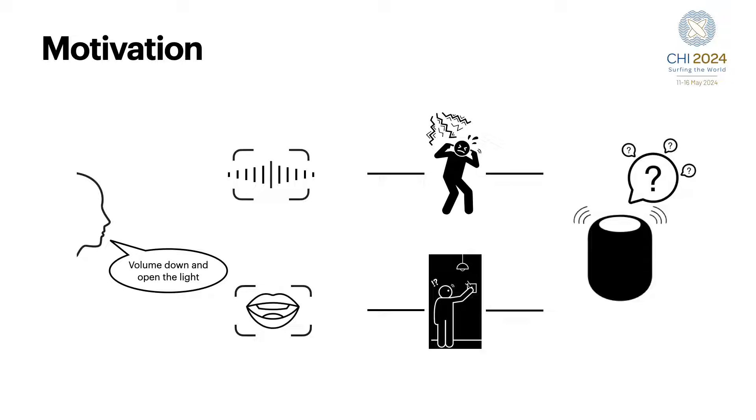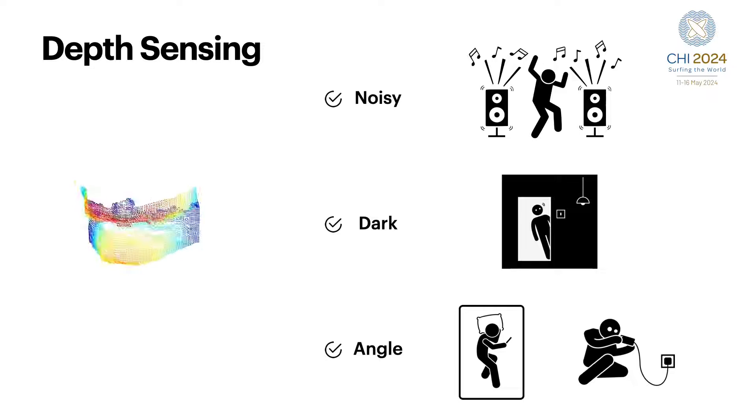However, it is known that low-light conditions and variations in user skin hinder visual speech recognition system's performance. Moreover, variations in the camera angle demand a lot of training data for a robust deep learning model.